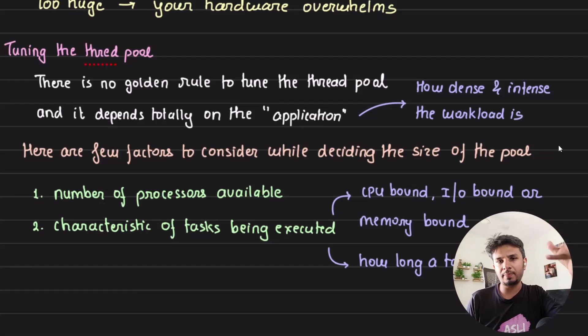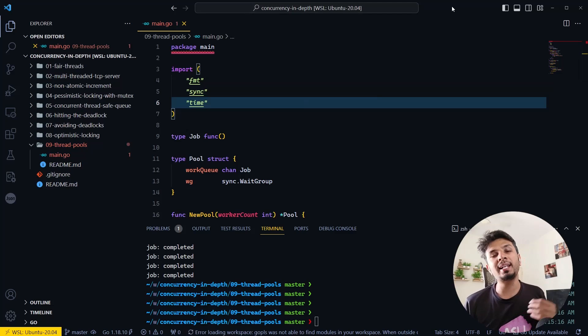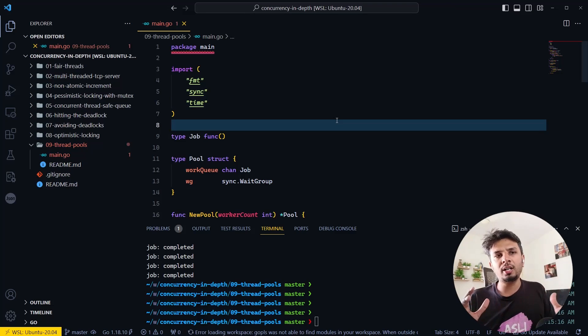Enough of the theory. Now that you know what thread pools are and the problems they solve, let's go to the code to understand how they're implemented. Here I have a very quick prototype written in Go. I'll give you a quick walkthrough.